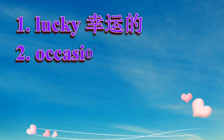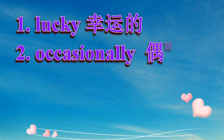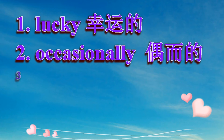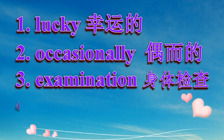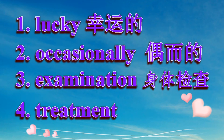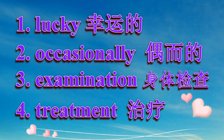第一個生字是 lucky，兩個音節，前面重：lucky。第二個生字 occasionally，大家最容易讀錯，看到前面的 o 就讀成 o 或 o，其實那個 o 很輕，occasionally，重音在 ca 那個地方：occasionally。